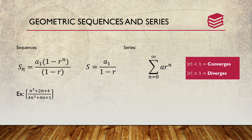Moving into geometric sequences and series: on the left is the general form of a sequence, with a₁ as the first term, n as the number of terms, and r as the rate of change. On the right is a general series written in sigma notation with a rate and starting term. If the rate r is less than 1, it converges; if greater than 1, it diverges.